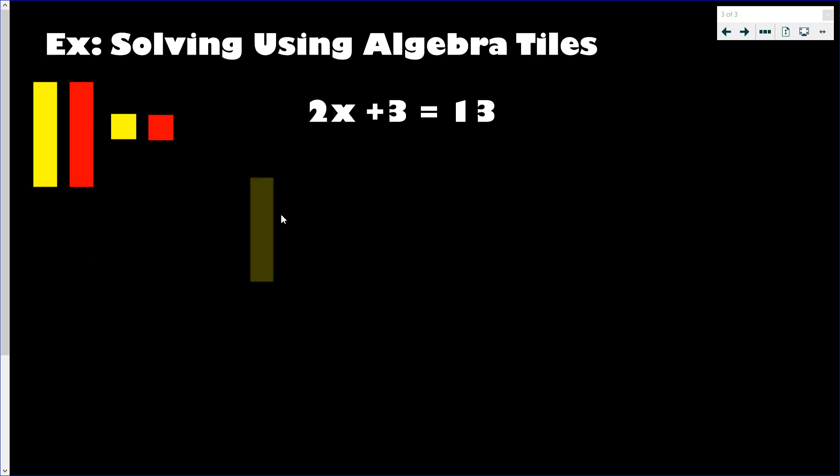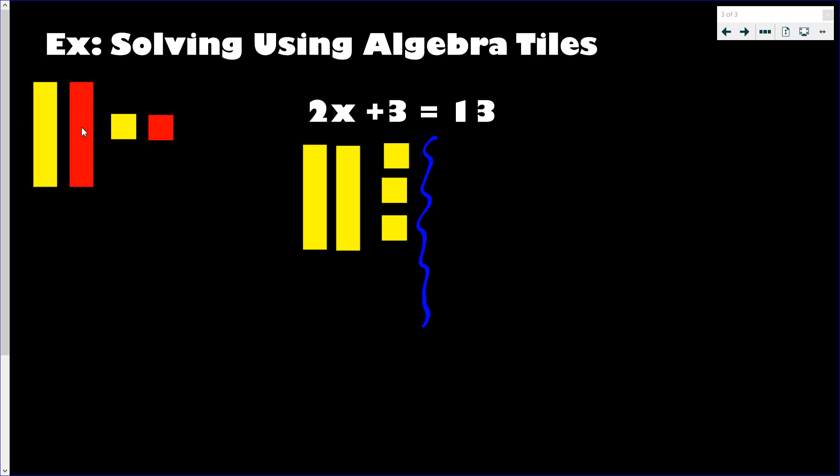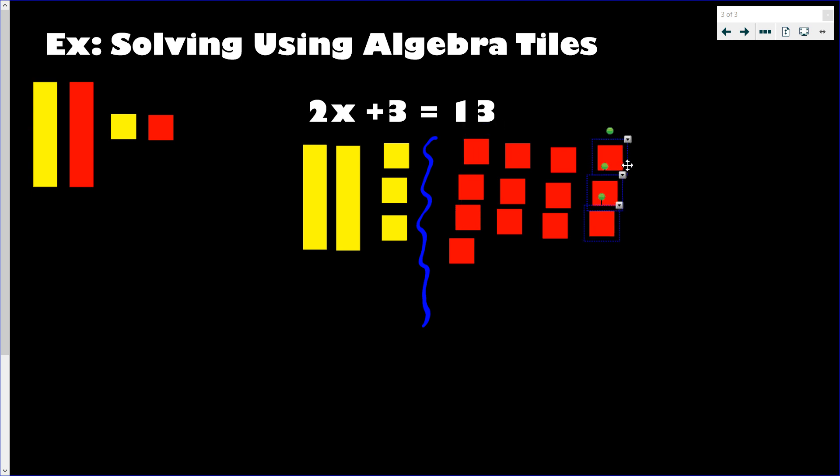All right, so I got 2x. So 2x, my ones, my x tiles are orientated a little differently this time. That's no big deal. And then I've got my three, so I need positive three, one, two, three. And then I'll draw my little squiggly line. And then I'll add thirteen of these, so one, two, three, four, and I'll just copy it a few times. So that's seven, eight, nine, ten, and then thirteen.